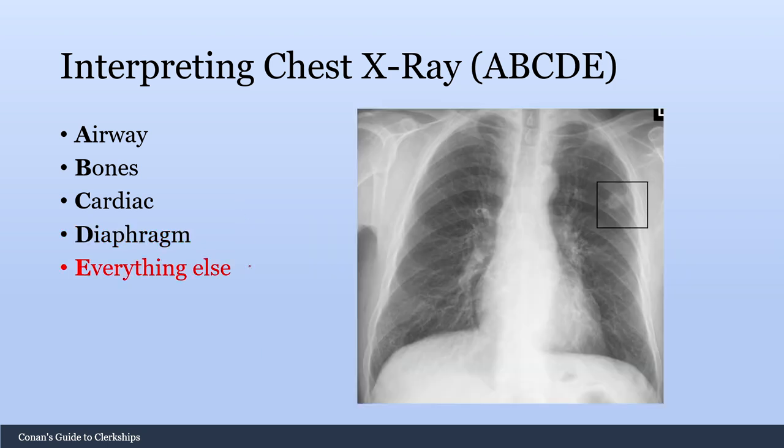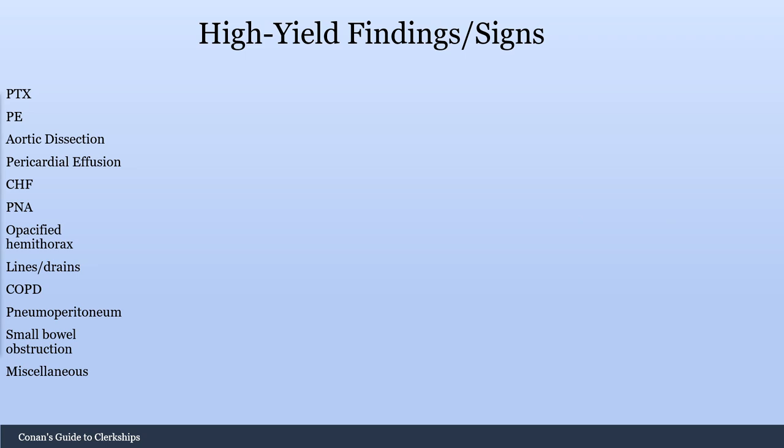E is for everything else. Now you can start looking at your lung fields for any pathologies, such as opacification, which would be concerning for cancer. Thanks for watching this first video on how to read a chest x-ray. Next I'll be going over high-yield findings and signs for common conditions you may encounter on the wards — the link to the next video will be in the description below.